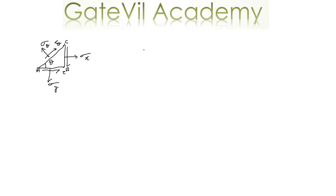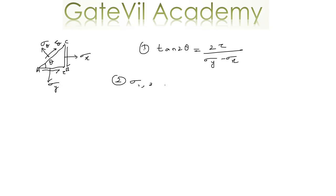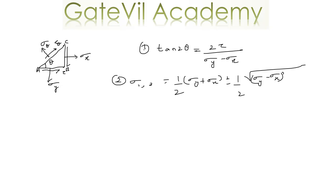Let us summarize what we have done. First, we found the angle at which the principal plane exists: tan 2θ = 2τ / (sigma y − sigma x). Then we found the principal stresses sigma 1,2 = half of (sigma y + sigma x) ± half of √[(sigma y − sigma x)² + 4τ²].